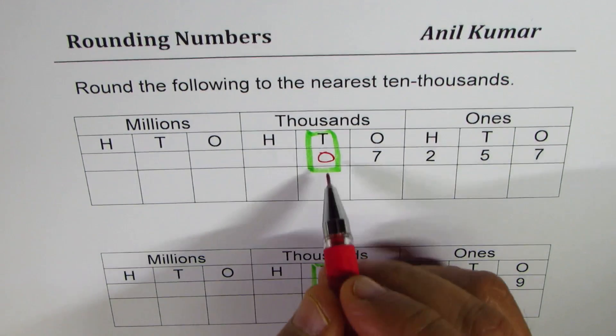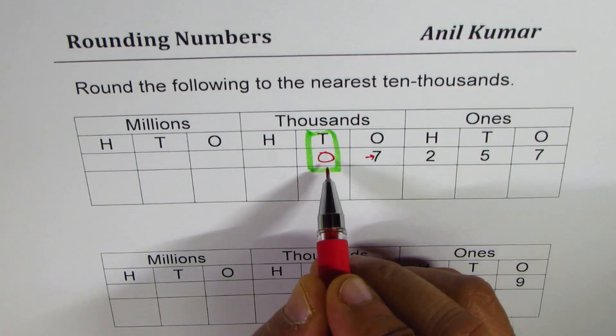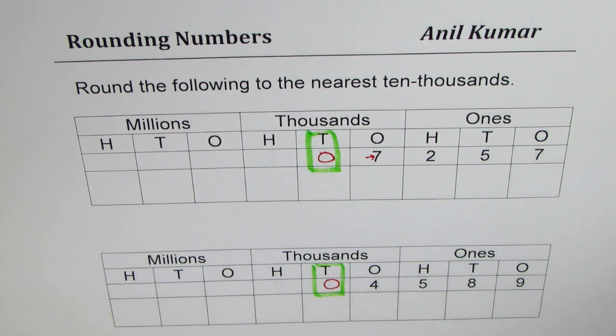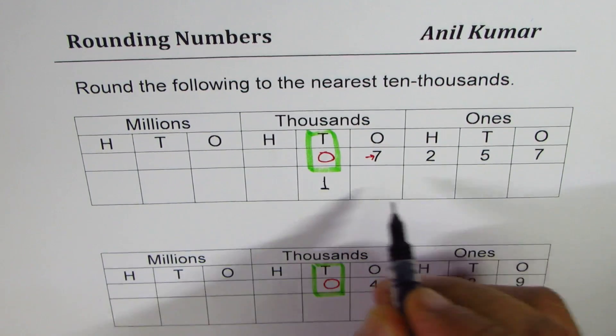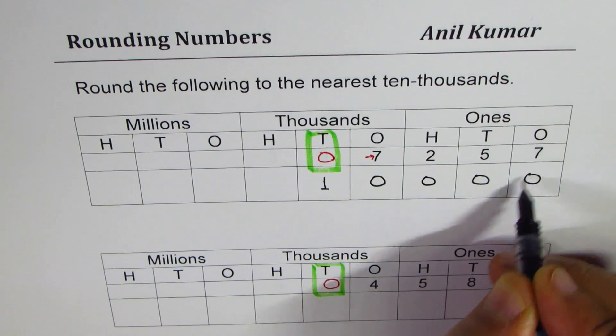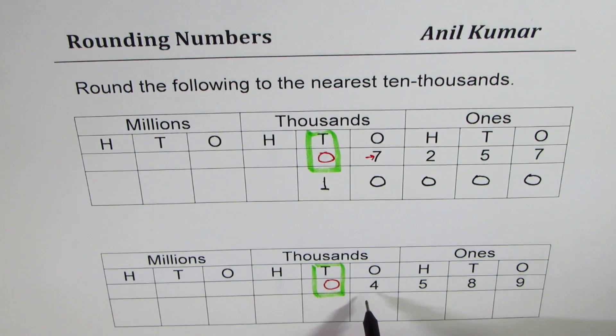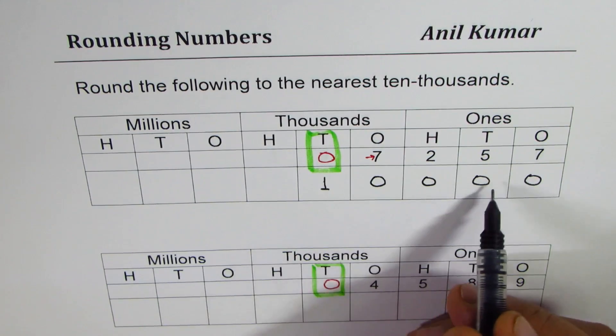Now to round this, we have to look at the number on the right. Since it is seven, we will increase this by one. So it becomes one and all numbers to the right becomes zero. That is how you are going to round it. 7,257 will be rounded to 10,000.